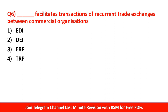Question number 6: 'Dash' facilitates transactions of recurrent trade exchanges between commercial organizations. Information about trade transactions between commercial organizations — which system handles this? Options are EDI, DEI, ERP, or TRP. The right answer is EDI — Electronic Data Interchange. Full form: Electronic Data Interchange.